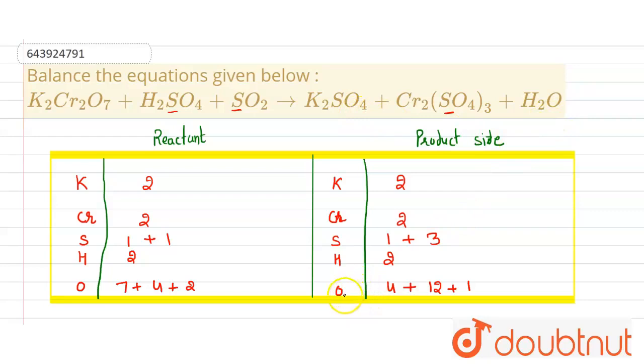First of all, hydrogen is already balanced. Total number of oxygen atoms here is 7 plus 4 which is 11, plus 2 equals 13, and here it equals 17. Potassium and chromium are already balanced, so sulfur is not balanced.